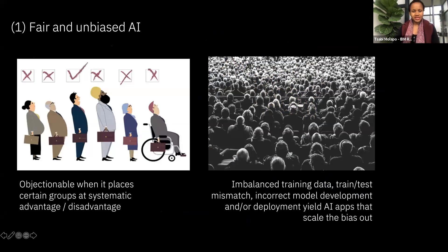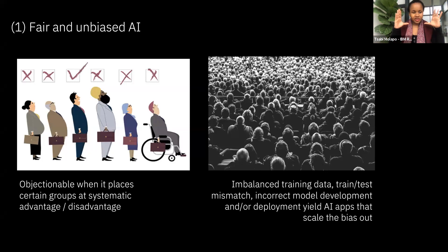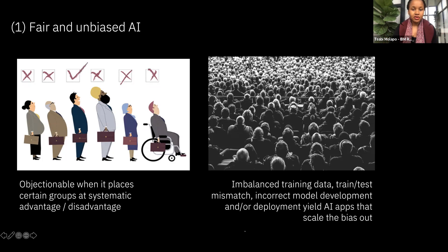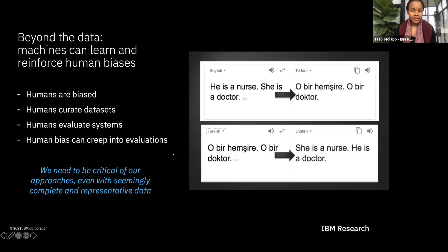Let's start with the most common topic — fairness and bias in AI. One of the first issues that came out when the global technical community began realizing the challenges with AI was fairness. Some of the early examples were facial recognition systems used in practice and in production in critical domains that were not trained on data representative of the general population — it wasn't fair to people of certain facial features or certain skin tones.